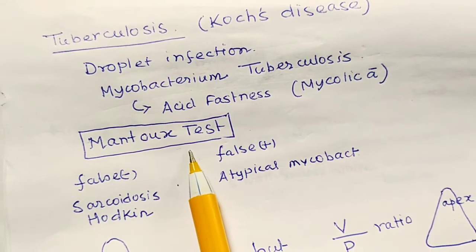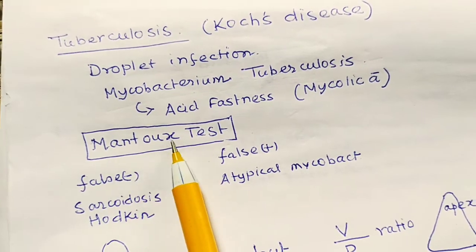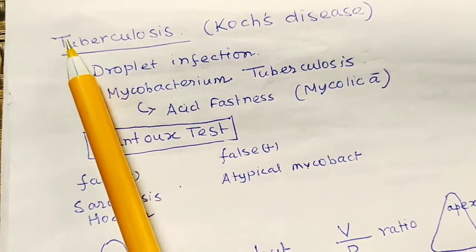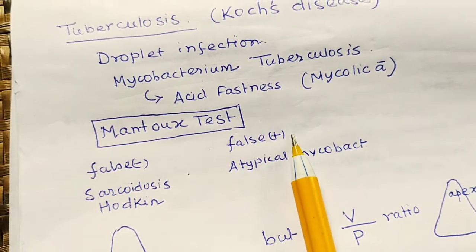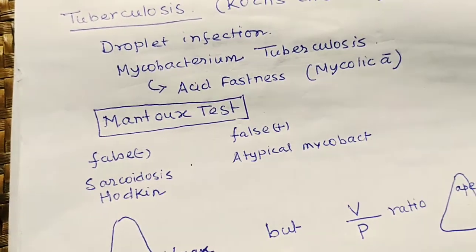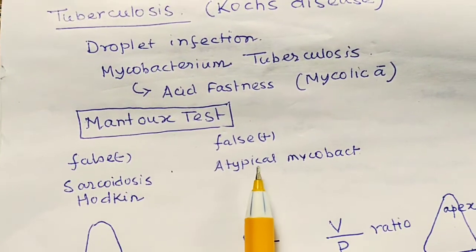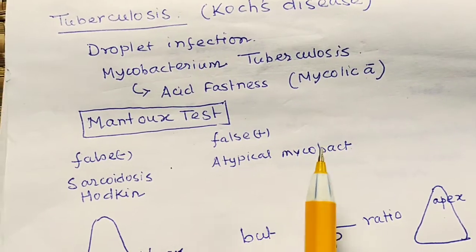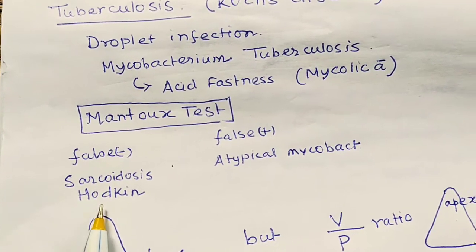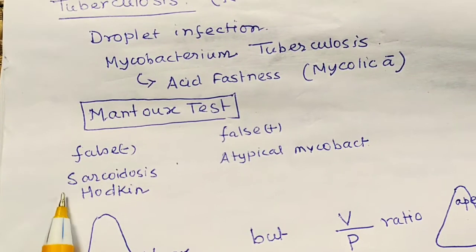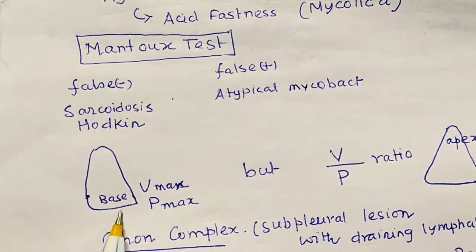We confirm tuberculosis by a test known as the Mantoux test. Remember, the Mantoux test gives a false positive result in atypical mycobacteria, and a falsely negative result in sarcoidosis and Hodgkin's disease.